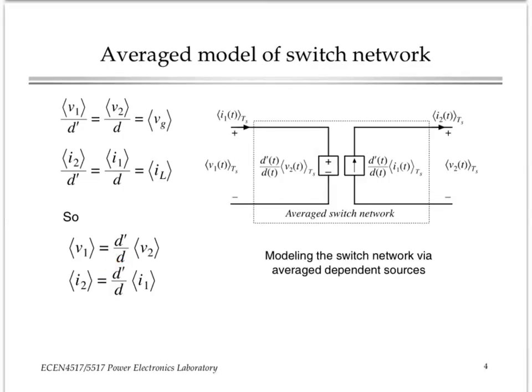And so, the average switch network can be described by a controlled current source on the output port and a controlled voltage source on the input port, with the ratio D prime over D representing the conversion function of the switch network in the average sense.